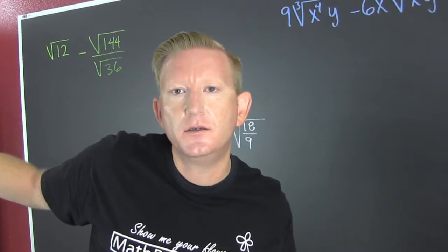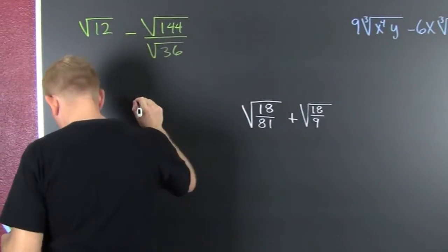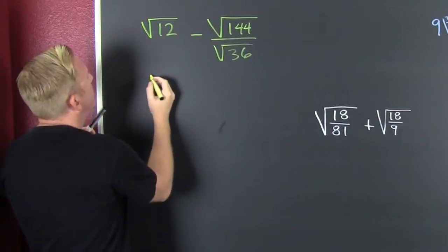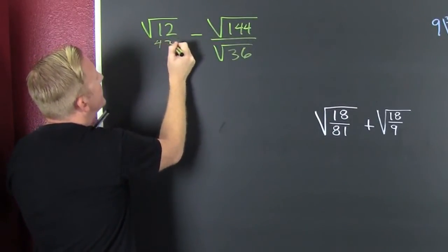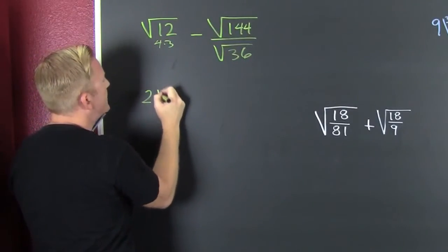We're adding like radicals. I'm looking at the square root of 12, that's a 4 and a 3. So the square root of 4 gets you that 2 times the square root of 3.